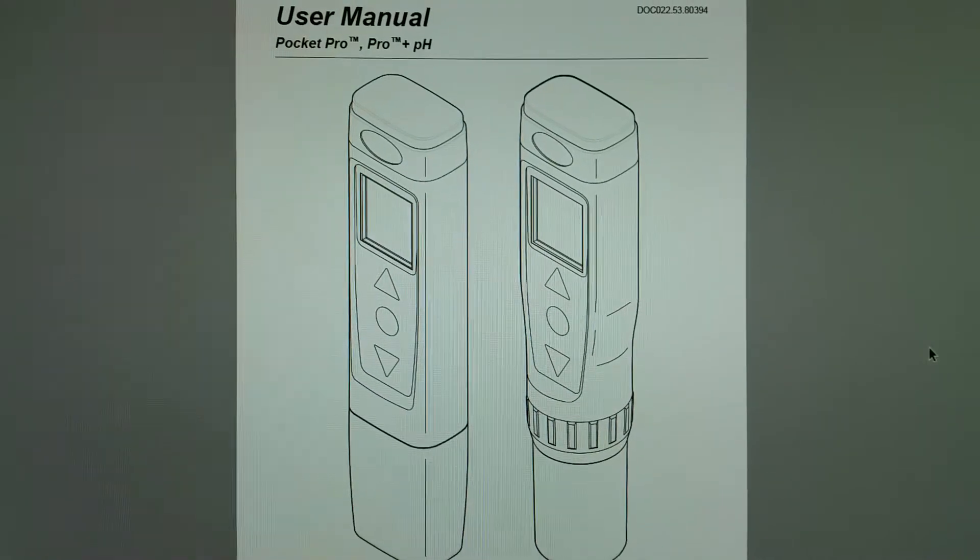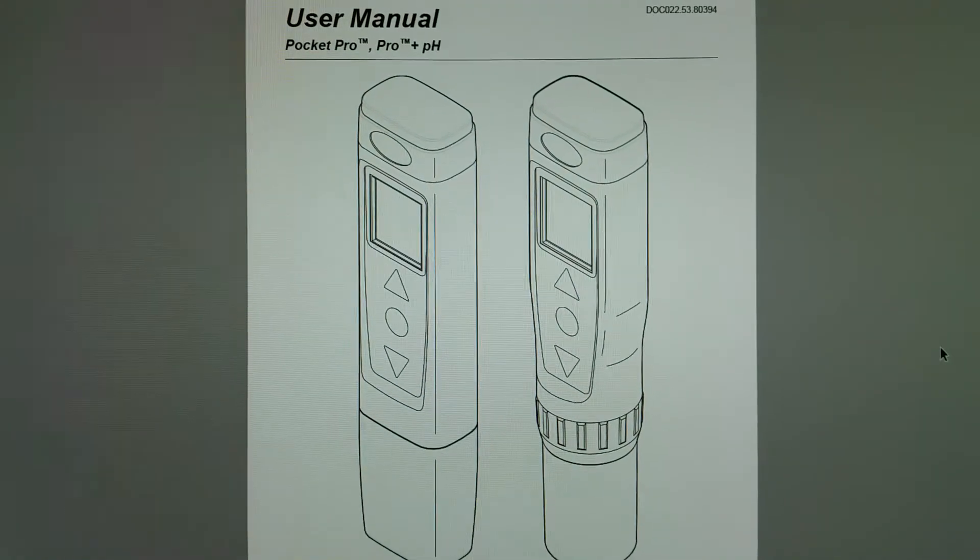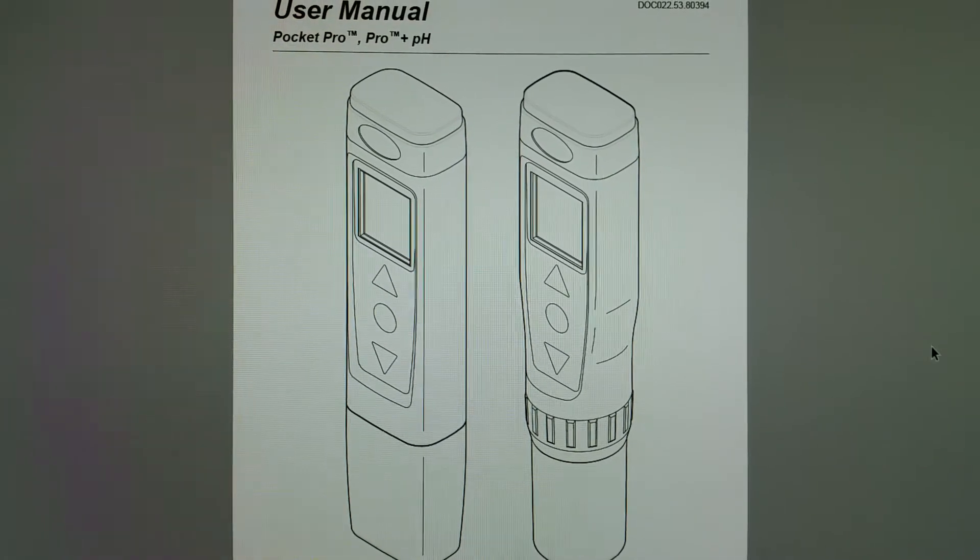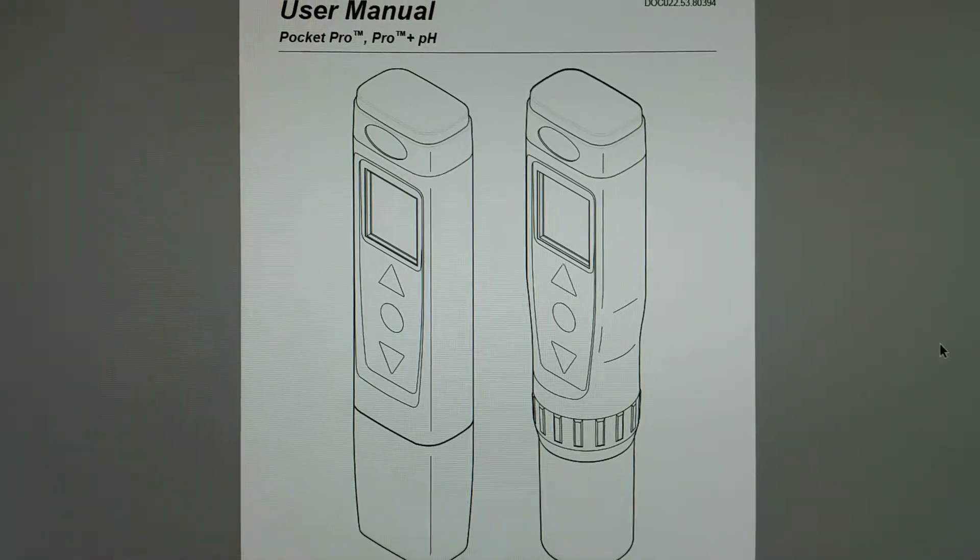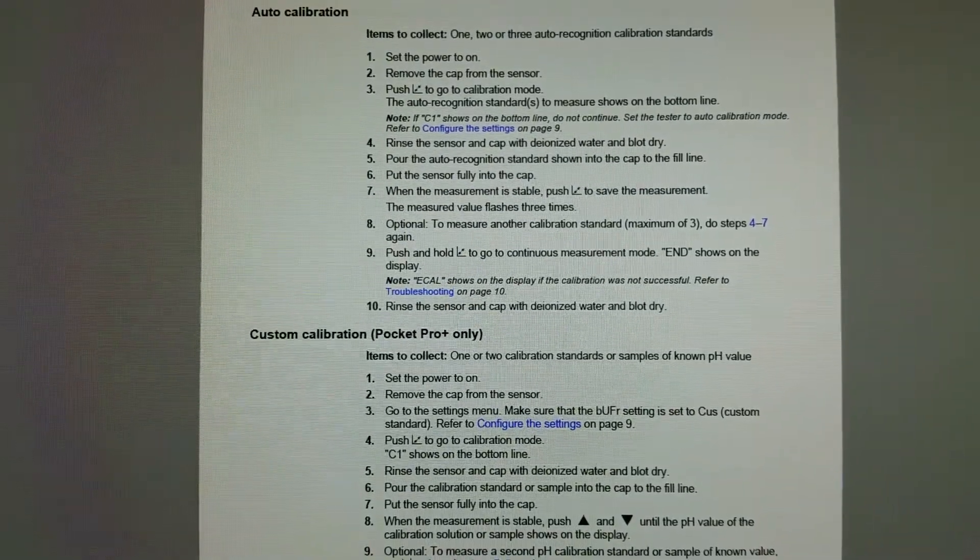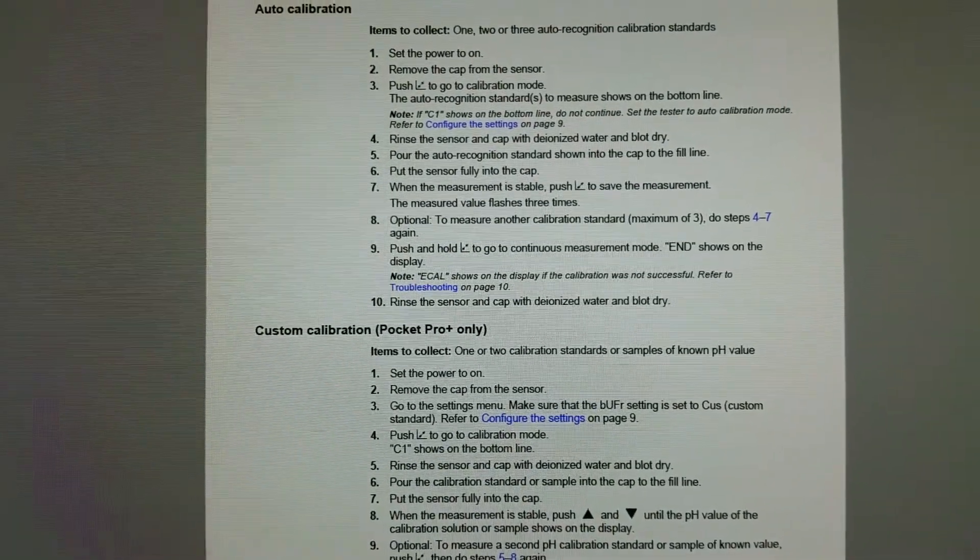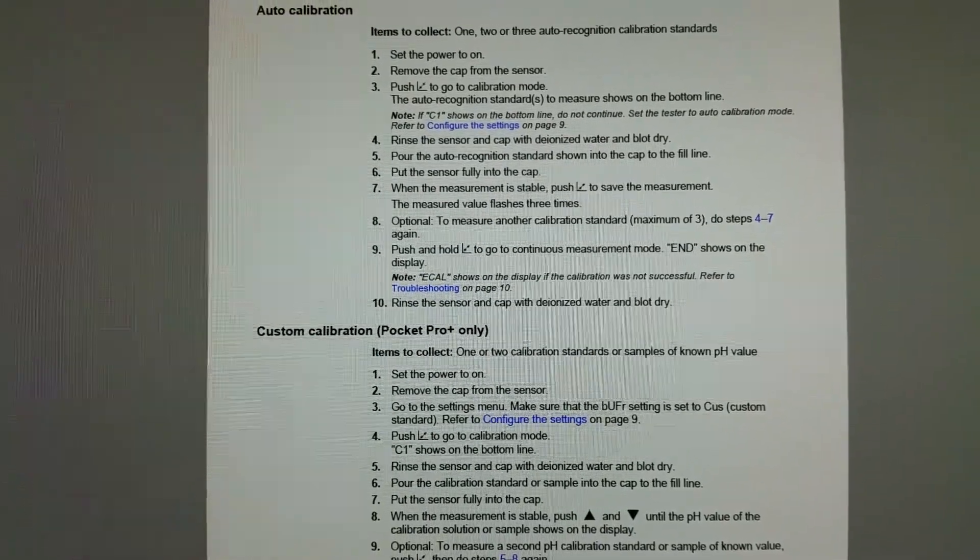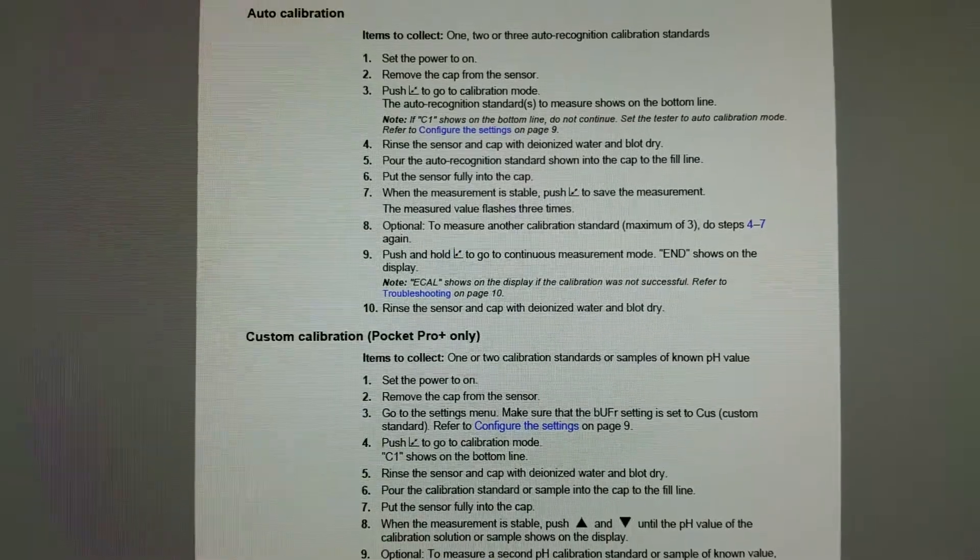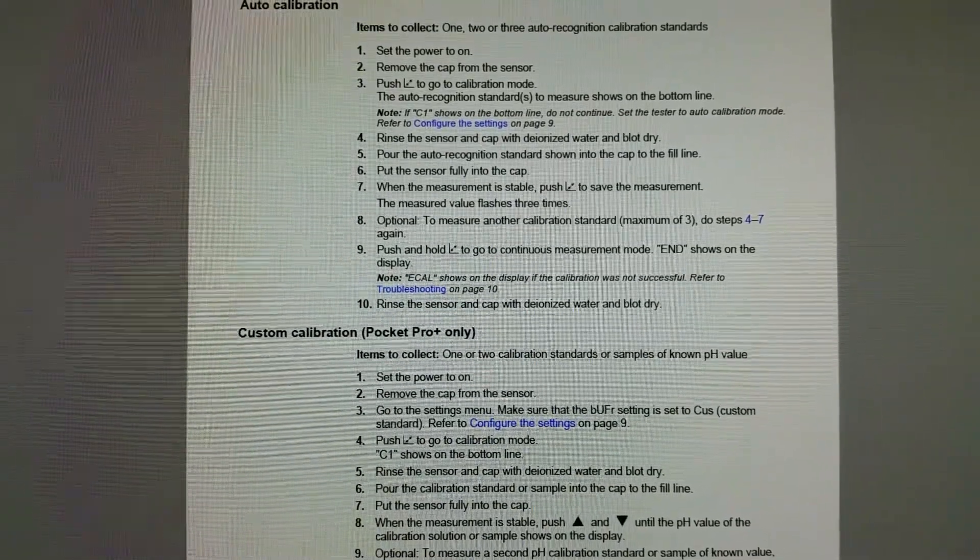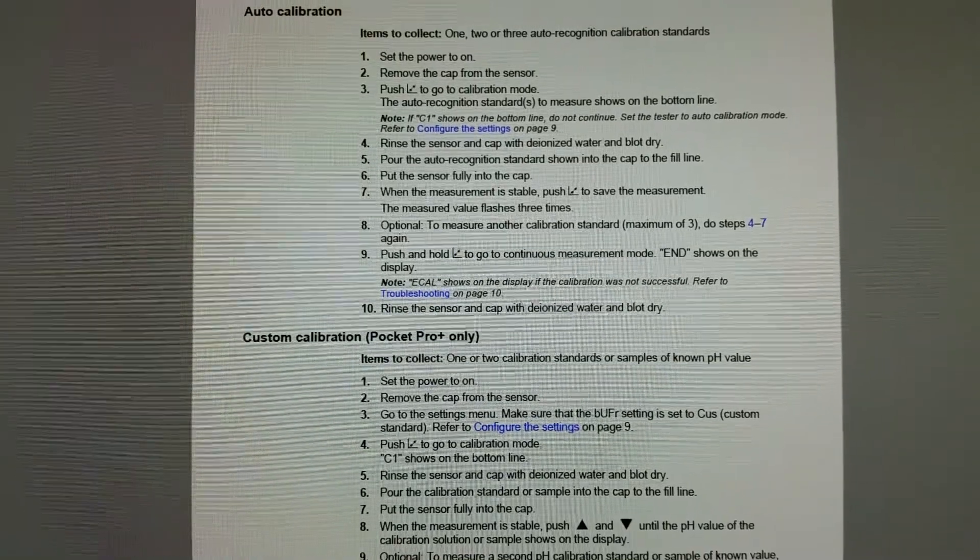Alright, this video is to demonstrate how to auto-calibrate your Hach Pocket Pro Plus meter. If you have the instruction manual, you can go to page 8 and follow the steps, or if you're like me and you lost the manual, or if you're just more of a visual learner, you can just watch this video.